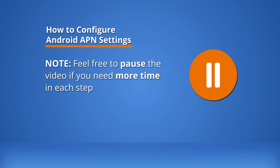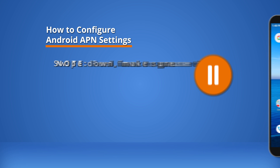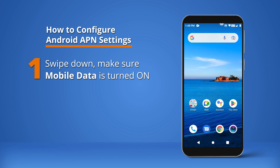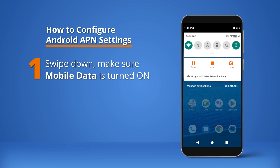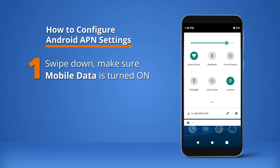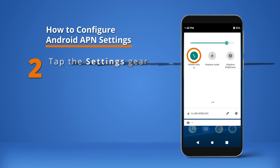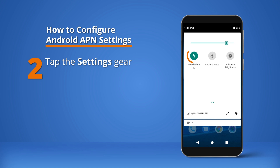Feel free to pause the video if you need more time in each step. Swipe down and make sure Mobile Data is turned on. Then tap the settings gear.